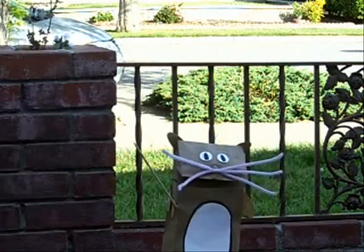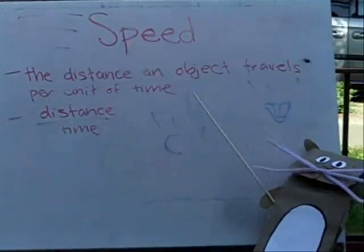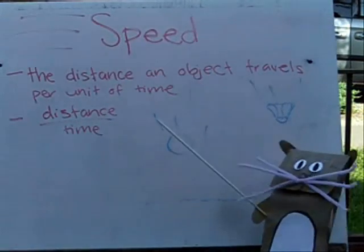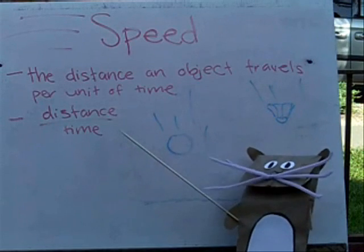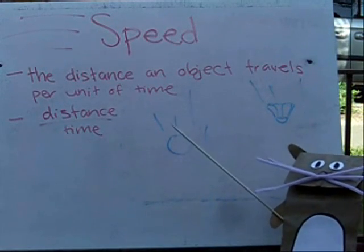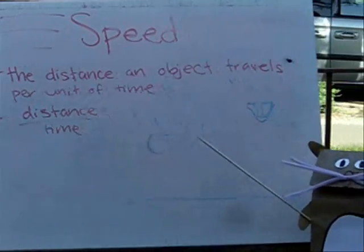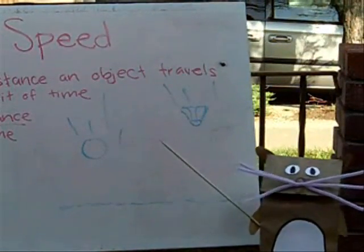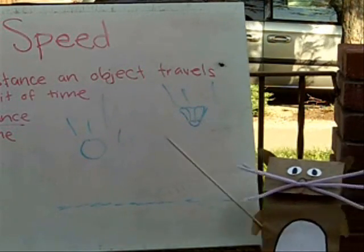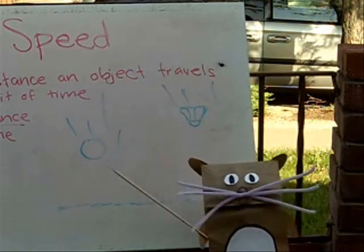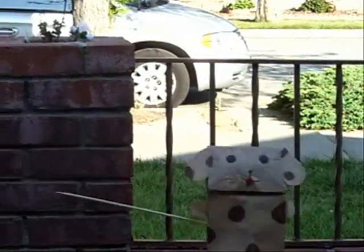The other concept is speed. Speed is the distance an object travels per unit of time. To calculate speed, you take distance divided by time. Badminton is the world's fastest racket sport. For our project, we dropped a ball and a birdie. The birdie fell slower than the ball because the birdie had more air resistance.